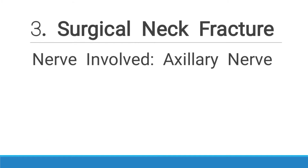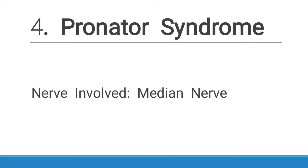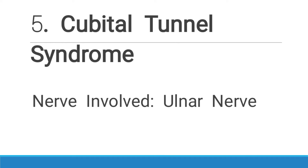Next is surgical neck fracture, referring to the surgical neck of the humerus. When there is a fracture of the humerus at that location, the nerve likely to be injured or damaged is the axillary nerve. Number four is the pronator syndrome, which mainly occurs at the elbow. It can also be called golfer's elbow because it is very frequent among people who play golf. The nerve involved is also the median nerve.